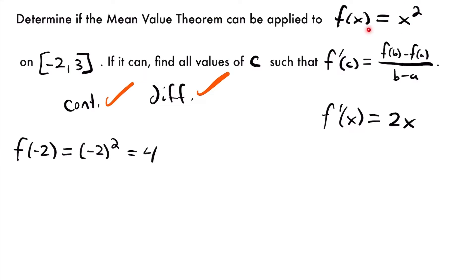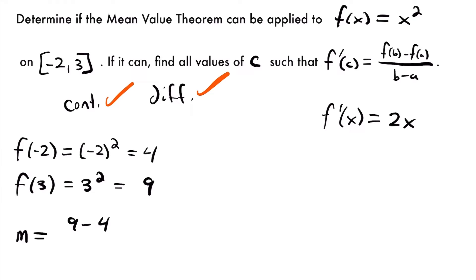We just plug negative 2 into our original function x squared, and that equals 4. Then we'll plug in 3, so f of 3 is equal to 3 squared, which is equal to 9. Now we can find our slope. That slope m is going to be equal to f of 3 minus f of negative 2, so we'll have 9 minus 4 divided by 3 minus negative 2. We just subtract in the bottom b minus a. So b is 3 and a is negative 2. This simplifies to 5 divided by 5, which is equal to just 1.